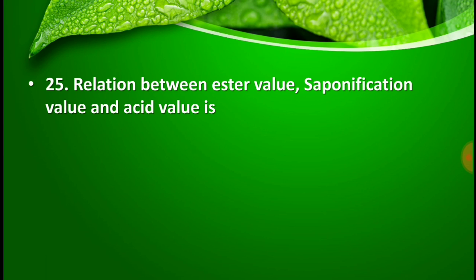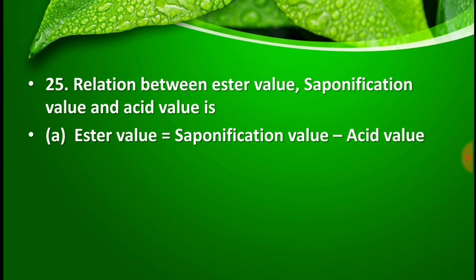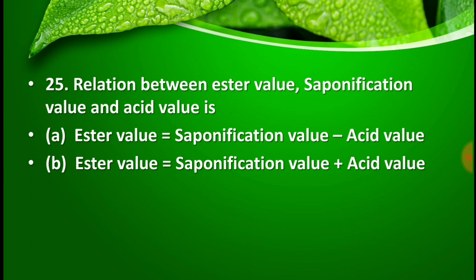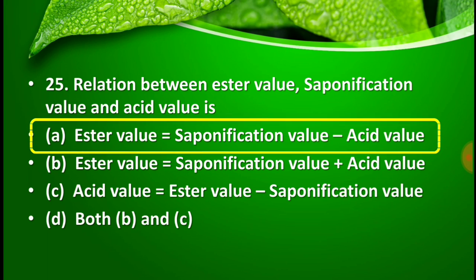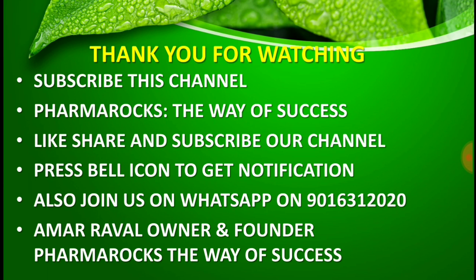Question number 25: The relation between ester value, saponification value, and acid value is — option A: ester value equals saponification value minus acid value, option B: ester value equals saponification value plus acid value, option C: acid value equals ester value minus saponification value, option D: both B and C are correct. The right answer is option A — ester value is equal to saponification value minus acid value. These were the 25 most important questions from Pharmacognosy.